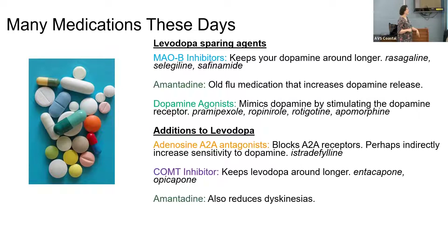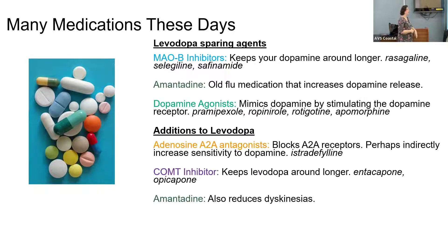Dopamine agonists are the most common cause of impulse control disorders. When we give these, we always have to educate patients about what impulse control disorder looks like — things like compulsive shopping, eating, or hypersexuality — and if you develop these things, we have to come off these medications. Levodopa can also cause this, but it's much less common than with agonists.